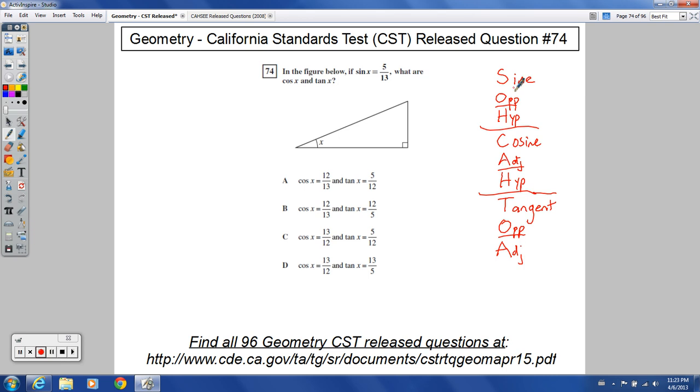And so first of all, we're talking about sine here. The sine of x, opposite over hypotenuse, in other words, is 5 over 13. Here's opposite, hypotenuse is always across from that right angle. So that's 5, that's 13.